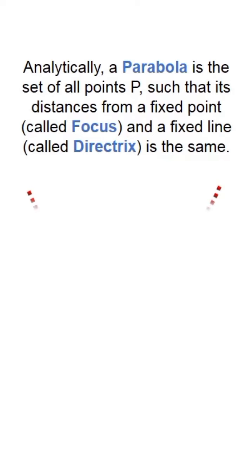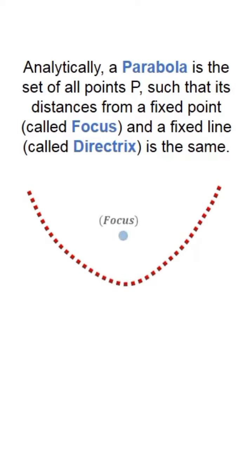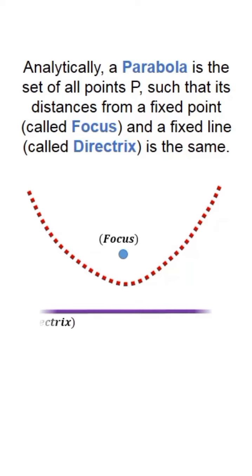For instance, a set of points forms a curve. There is a fixed point inside the curve — that is the focus. There is a fixed line on the opposite side of the curve — that is the directrix. Suppose one point is located here. Its distance to the focus and its distance to the directrix is equal.